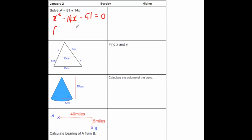So let's put our brackets on — two brackets — equals 0, with x at the front of both of them. The two numbers will multiply together to give you minus 51 and add together to give you minus 14, because it's just an x squared quadratic where the coefficient is 1.